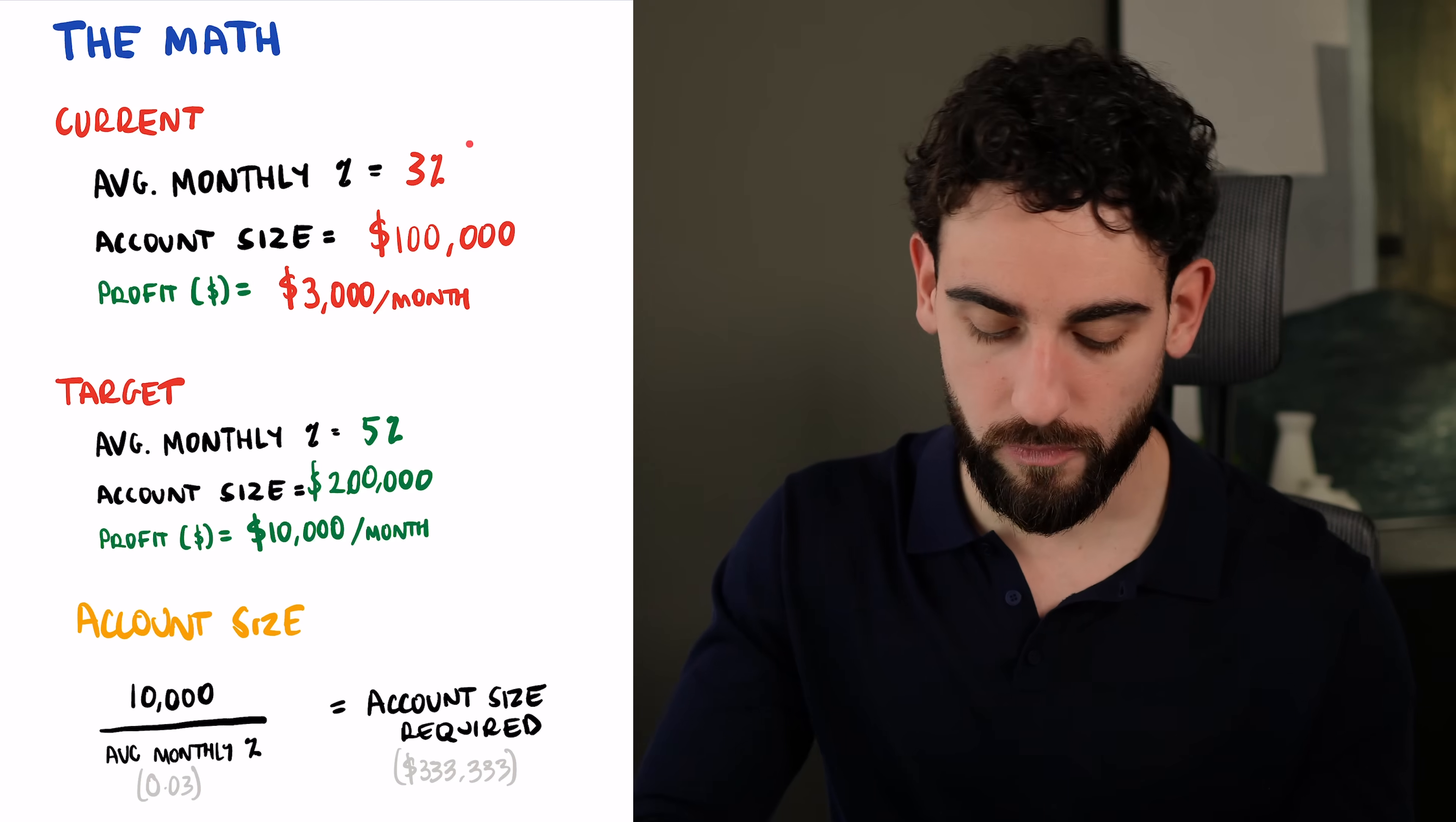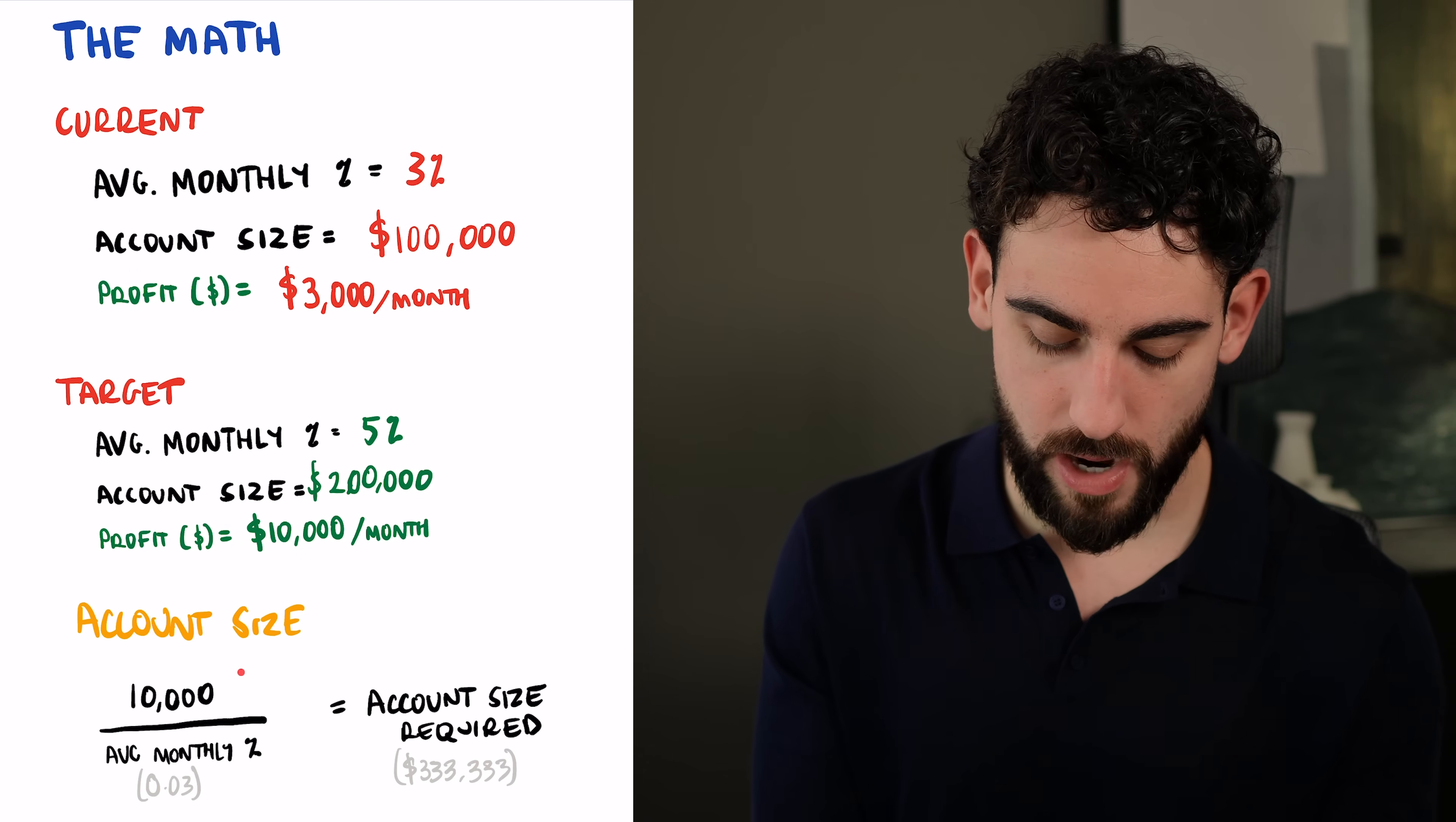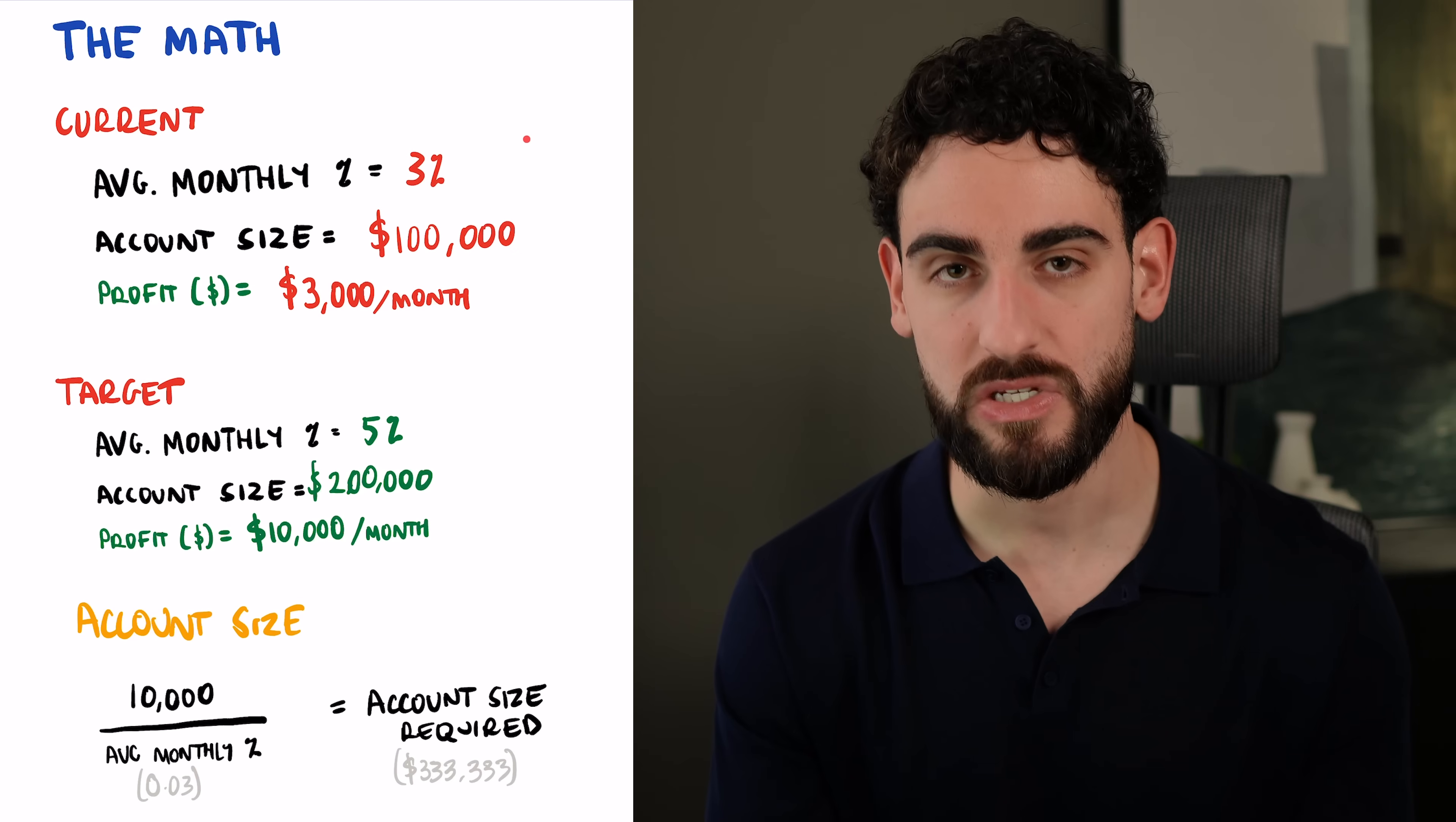So I want each of you to do this. Let's say your average monthly return is 3% and your current account size is $100,000. If you want to get to $10,000 per month, you do $10,000 divided by 0.03, and you figure out your account size required is $333,000. That's the account size you need to scale up to.